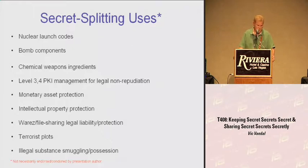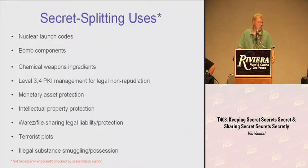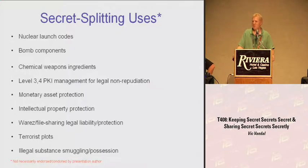Illegal substance smuggling or possession: say you know the magic number with ecstasy is 20 hits — that's where possession becomes trafficking, going from a five-year penalty to 20 years. So don't carry 20 hits; carry 10 and get your buddy to carry 10. Or carry 19 and get your buddy to carry one. Not that I'm endorsing illegal drug use — these are just examples of secret splitting. I hope I explained it somewhat clearly.